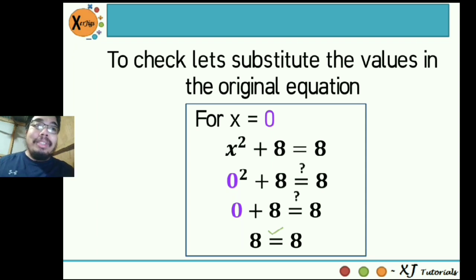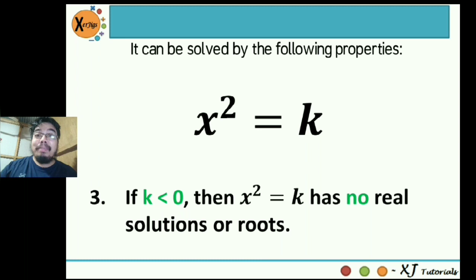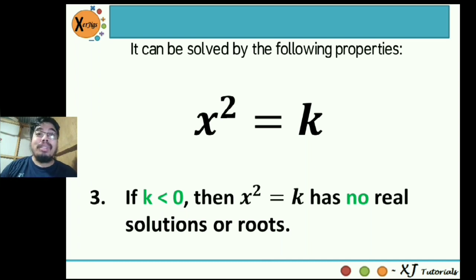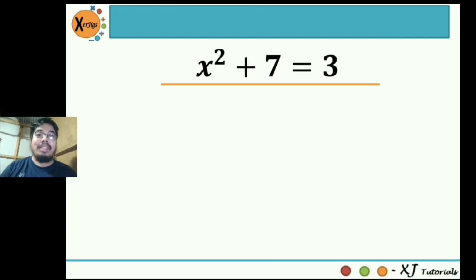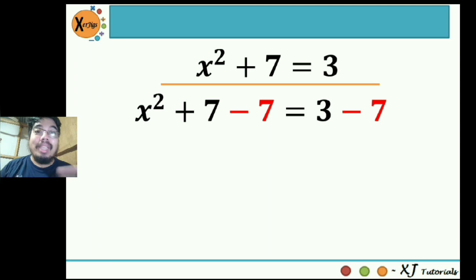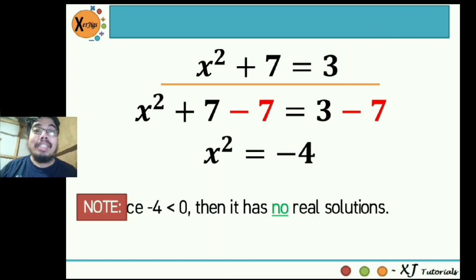How about if k is less than 0? Our last property states: if k is less than 0, then x squared is equal to k has no real solutions or roots. So if your k has a value less than 0 — like negative 1, negative 2, negative 3, negative 4, negative 5, to the negative infinity — then such a quadratic equation has no real solutions or roots. Example: x squared plus 7 is equal to 3. We isolate x squared by subtracting 7 on both sides: x squared plus 7 minus 7 is equal to 3 minus 7. So x squared is equal to negative 4. The value of k here is negative 4 and it is less than 0, so therefore this equation has no real solutions.